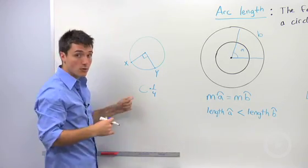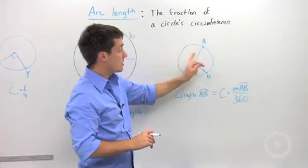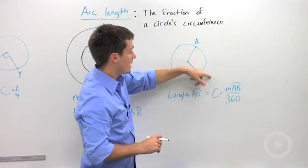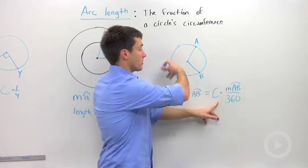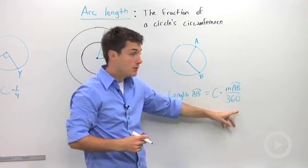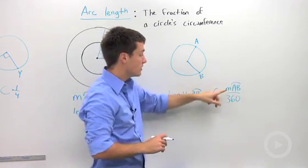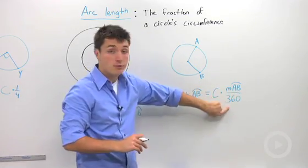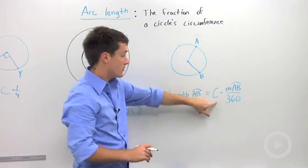So the way that we calculate arc length is if I have some circle with an arc AB, the length of that is the circumference of the whole circle times the fraction of the circle. So this part right here tells you if you know measure of arc AB, just write it over 360 and that will tell you how much of the circle you're using.